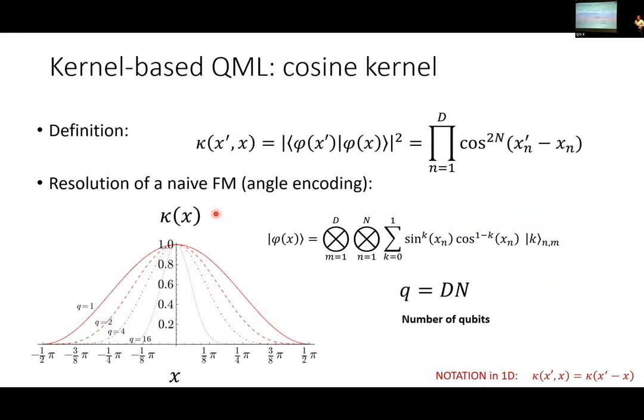It turns out that if you take some feature maps from the literature - quantum states where if you take an inner product you get some expression - you can obtain the same expression in many ways. People often use this kind of expression because it's simple, but it's not very efficient.